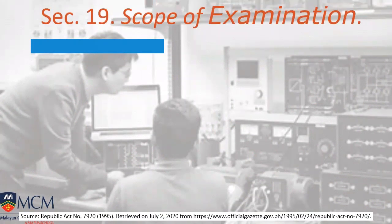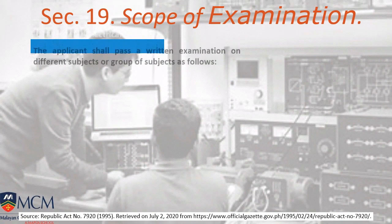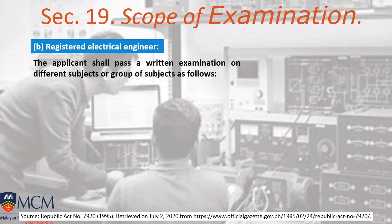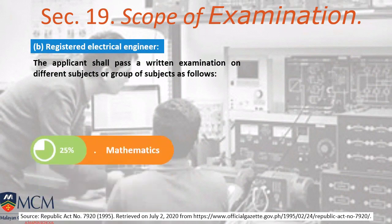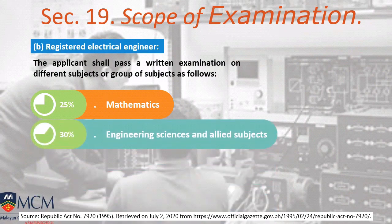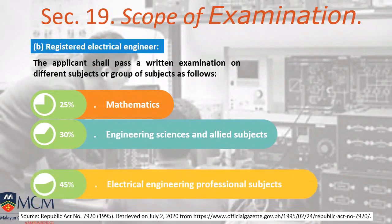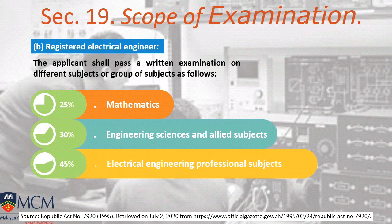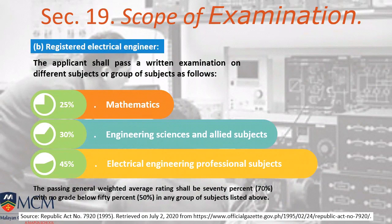The scope of examination for a Registered Electrical Engineer under Section 19: you must pass a written examination on different subjects. Mathematics accounts for 25% of the total grade, engineering sciences and allied subjects account for 30%, and the heaviest is the major subjects — electrical engineering professional subjects — which weigh 45% of your total score for the board exam.